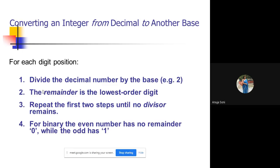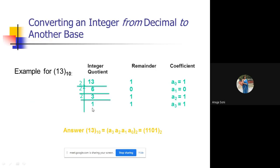Till what point do you have to continue this process? Till the value of the quotient comes out to be 0. At that point, as and when you get the value of the quotient as 0, you have to stop the process.